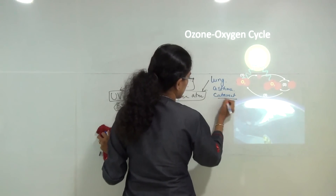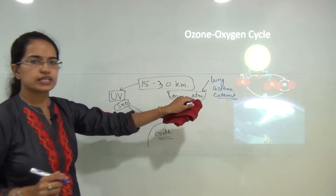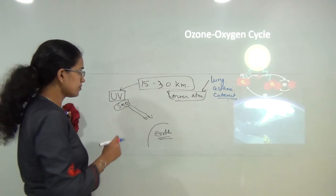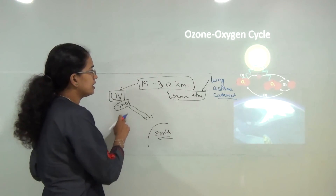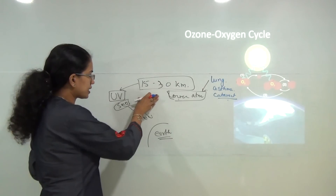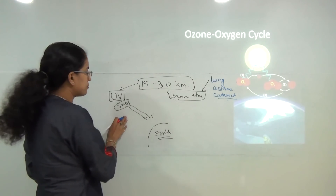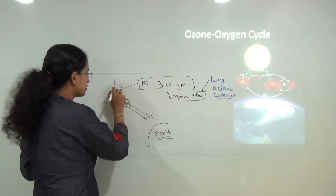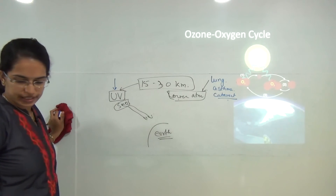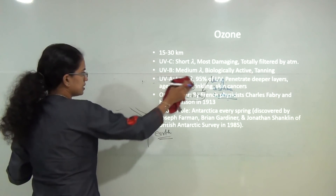Ozone in the lower atmosphere can also lead to various skin diseases. When we talk about ozone protecting against ultraviolet rays, we must understand the various types. There are typically three basic ultraviolet rays: UVA, UVB, and UVC.